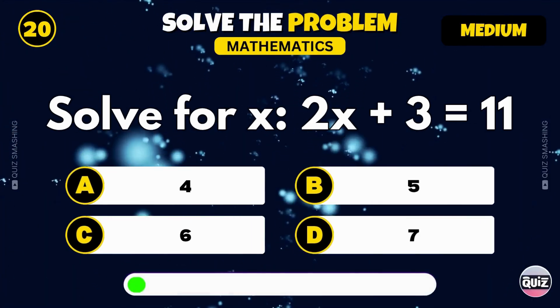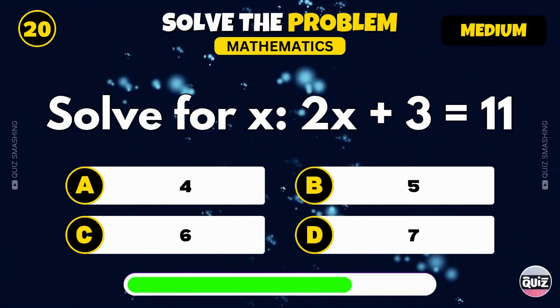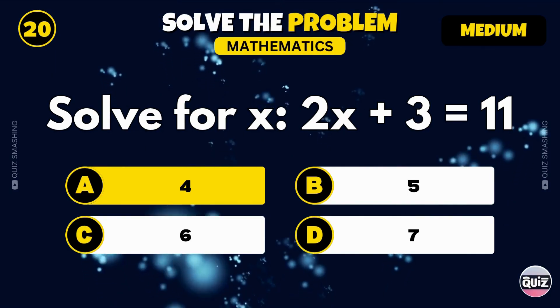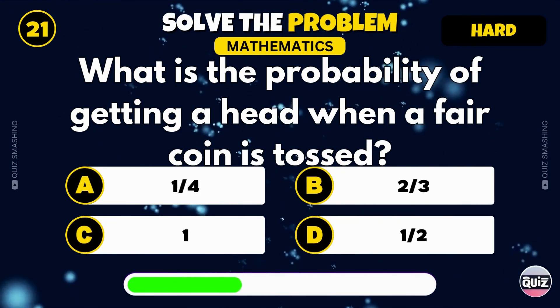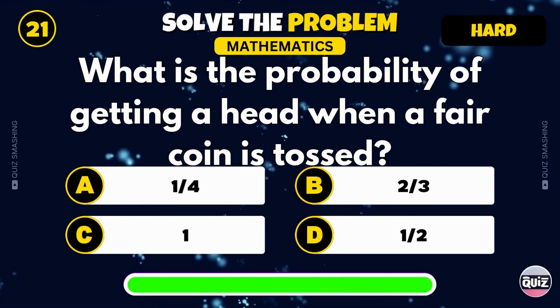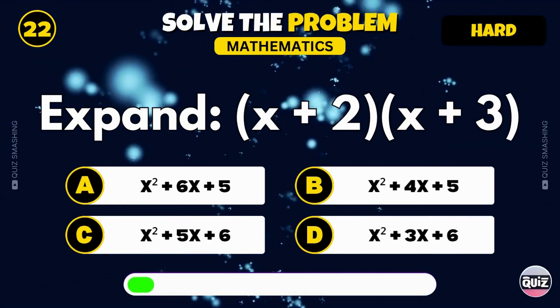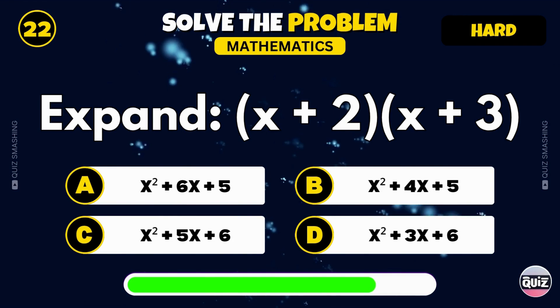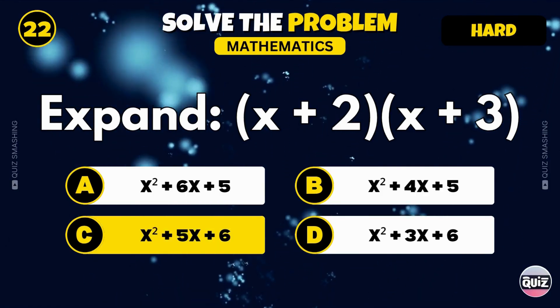Solve for x: 2x plus 3 equals 11. That's right, x equals 4. What is the probability of getting ahead when a fair coin is tossed? You got it, one half. Expand the expression open bracket x plus 2 close bracket times open bracket x plus 3 close bracket. The result is x squared plus 5x plus 6.